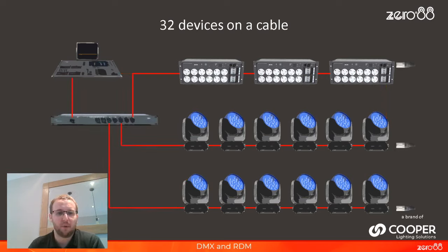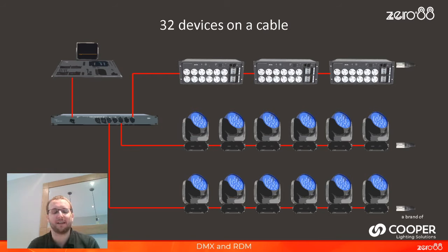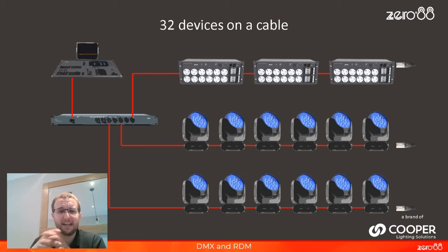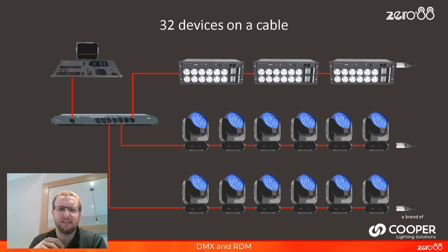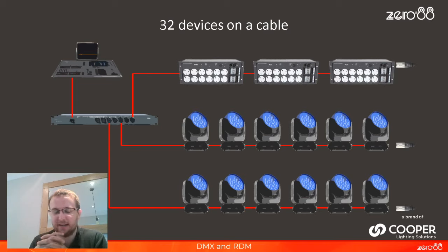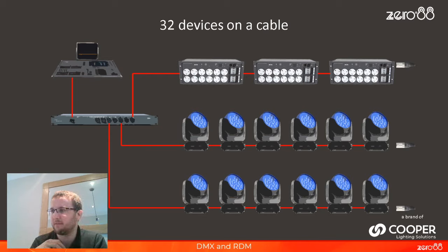Another way to run a DMX network is using a DMX Splitter. In this situation, we now have three lines of DMX coming out of our splitter. We still have the total limitation of 512 channels — that hasn't changed. But the advantage is a reduction in cabling and an element of reliability: if you lose any one of these cables, you're not going to lose your whole lighting network, only part of it. There are now three end-of-lines, so you need three DMX Terminators in this situation.